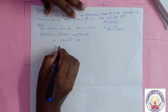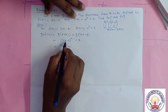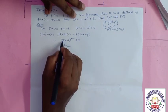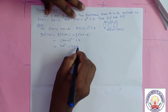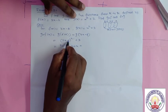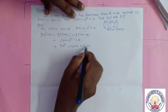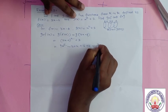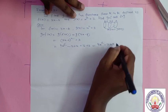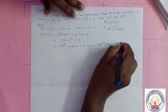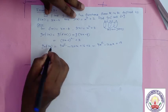a² = (3x)² = 9x², minus 2ab = 2 × 3 × 4 = 24, so minus 24x, plus b² = 4² = 16, plus 3. Adding the constants: 16 + 3 = 19. Therefore g∘f(x) = 9x² - 24x + 19. This is the function g composition f of x.